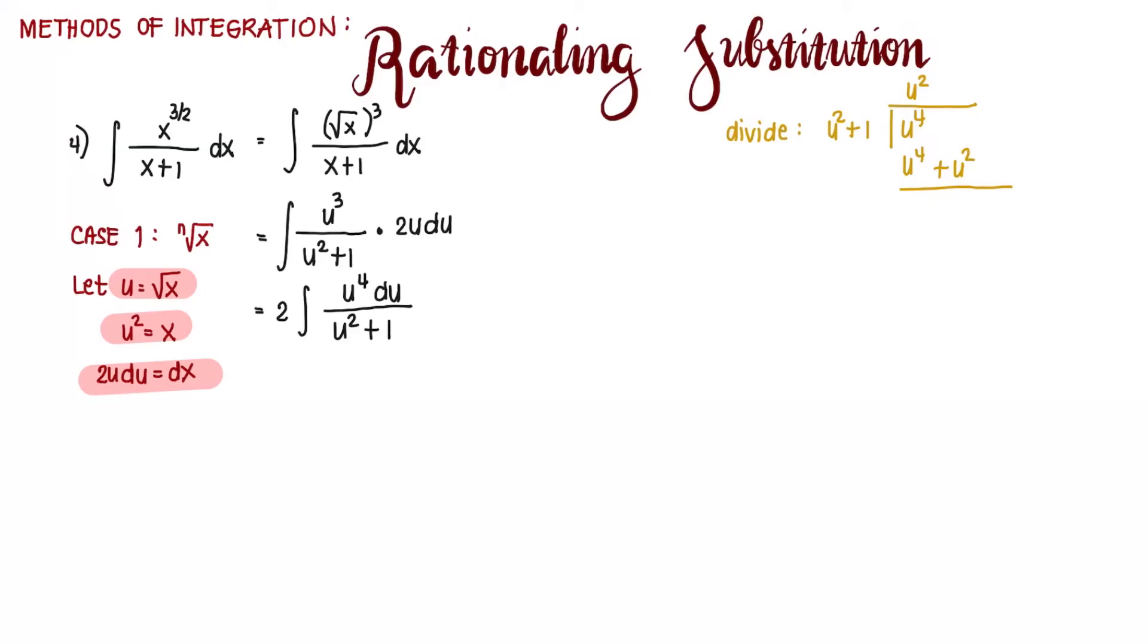There is an imaginary 0 here minus u squared, giving us negative u squared. Negative u squared divided by u squared is negative 1. Multiplying again.